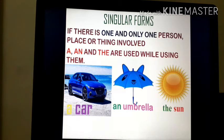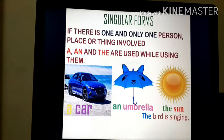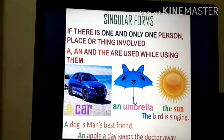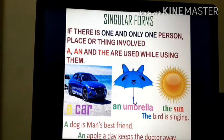Let's see some example sentences. 'The bird is singing.' Here, the bird means we are only talking about a single bird. 'A dog is man's best friend.' Here, we are talking about a single dog. 'An apple a day keeps the doctor away.' How many apples? Yes, a single apple. Thus, a car, an umbrella, the sun, a dog, an apple — these are singular in number.